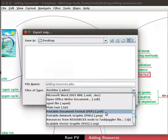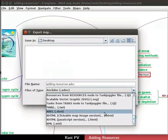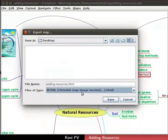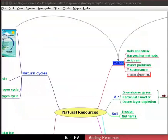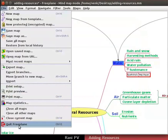To export the file into XHTML, choose the XHTML option. I will choose the XHTML type of file. XHTML gives a clickable map image of the map. Type the file name as addingresources.html in the desktop directory. Click on Save. Let's quit Freeplane. Click on File, Quit Freeplane to exit Freeplane.